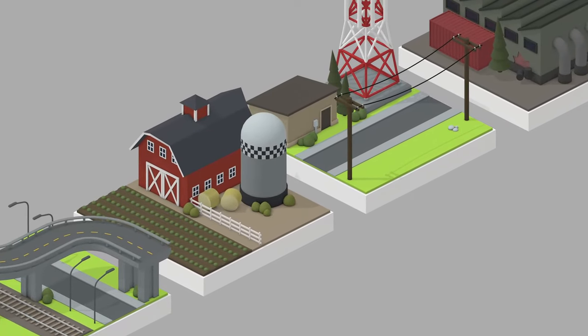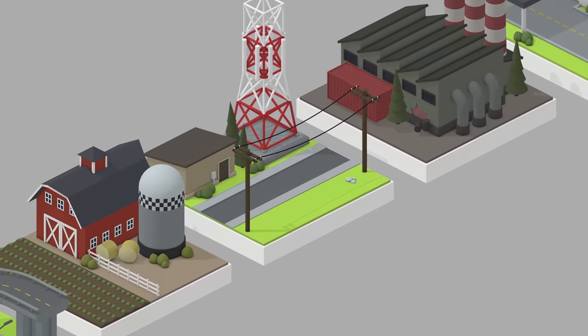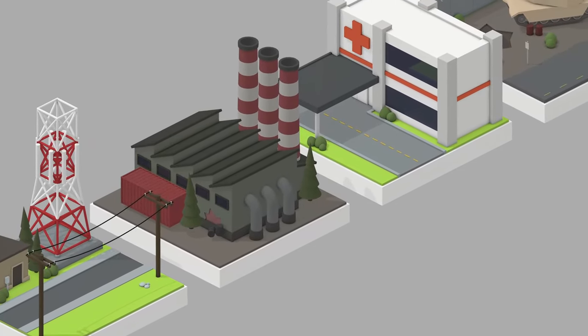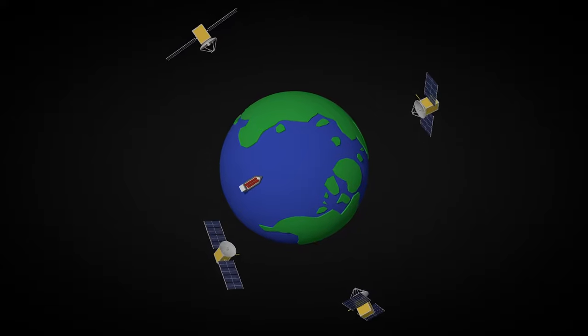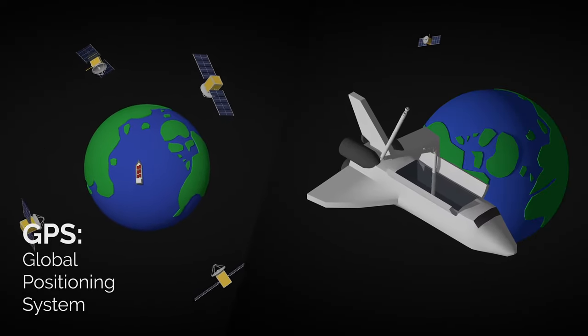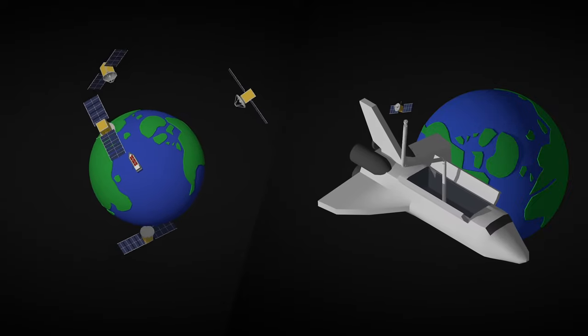Congress also funds research because it recognizes the potential for research to have broad societal impacts in unexpected ways. As a result, many groundbreaking technologies, like GPS and advanced prosthetic limbs, have their roots in NASA technology.